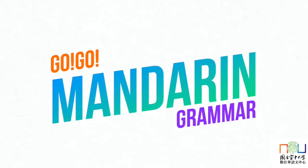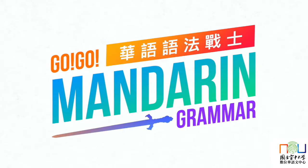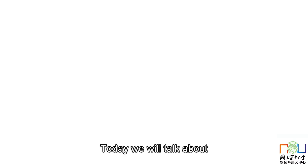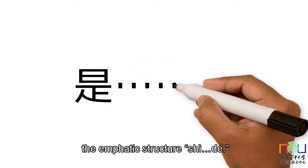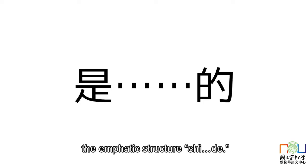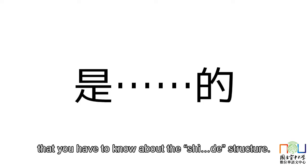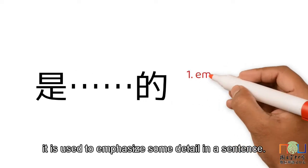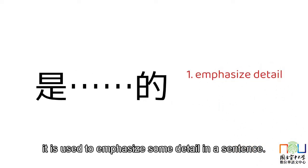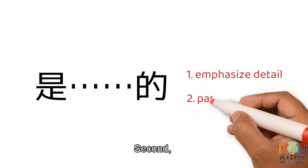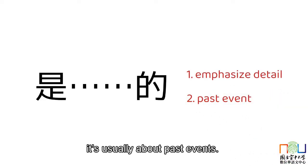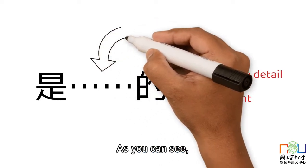Welcome to Go Go Mandarin Grammar! Today we will talk about the emphatic structure 是的. There are two key points that you have to know about the 是的 structure. First, it's used to emphasize some detail in a sentence. Second, it's usually about past events.